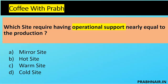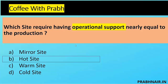Next: which site requires having operational support nearly equal to production? Cold site — remove, because we have nothing there. Warm site — only has rack, cabling, and everything but we need to move the server, so not very close. Mirror site is equal to production — it's actually an alternate production site, so eliminate. The only option left is hot site, because in a hot site we don't have recent data — we need to move data and make it operational. Everything else is there: people, process, technology, and server. The answer is B — hot site.